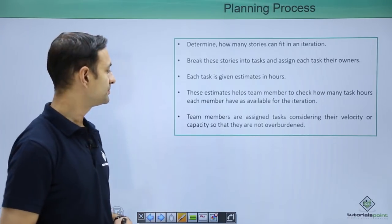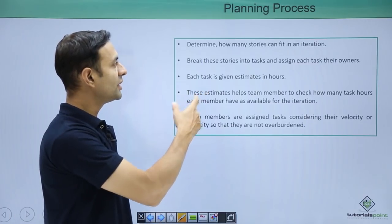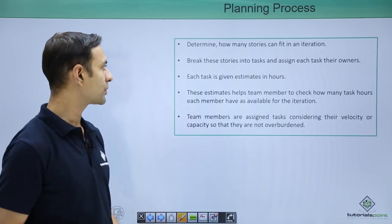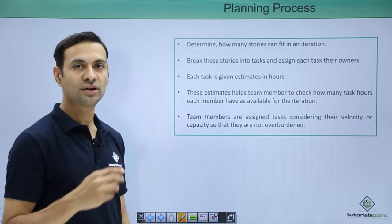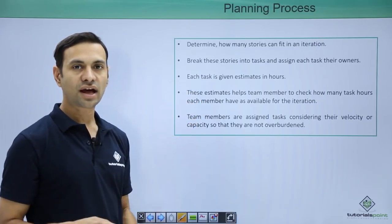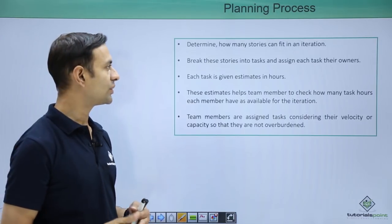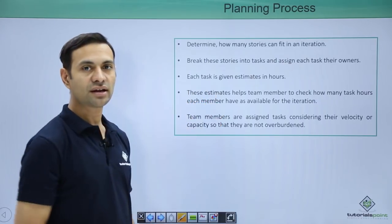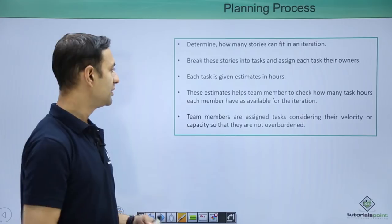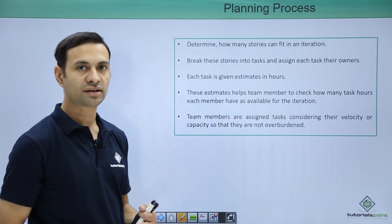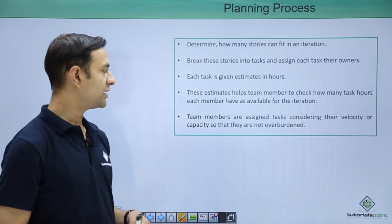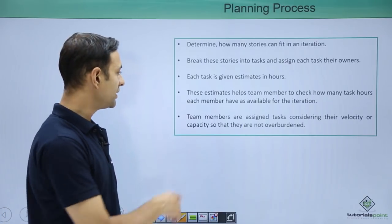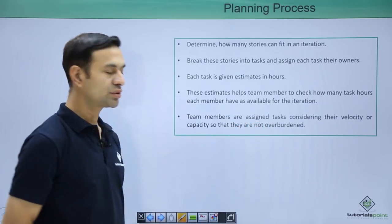The planning process: first, determine how many user stories can fit in an iteration — maybe 4, 5, or more. Then break these user stories into tasks, which are the actual work to be done by developers or testers, and assign each task to their owners. Each task is given estimates in hours — 8 hours, 10 hours each — to help team members ascertain how much time is required and confirm they can fulfill their commitments. Team members assign tasks considering their velocity so they are not overloaded.